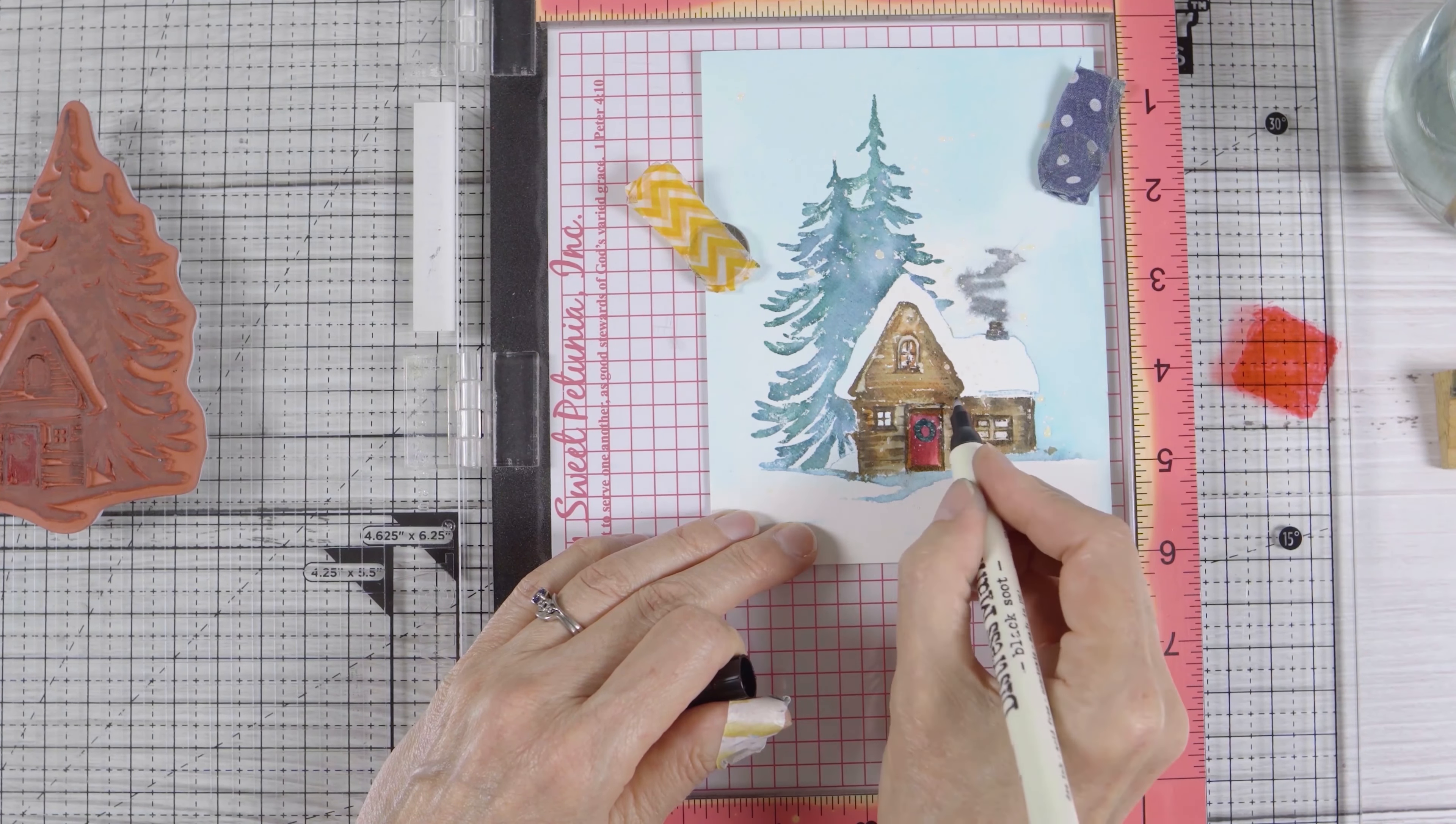I'm going to add a little bit more interest to my snowy roof now. There's one shadow included in the stamp, so I'm adding another shadow around the chimney and a little bit of shadow just down the sides of the big pile of snow that's on the roof.